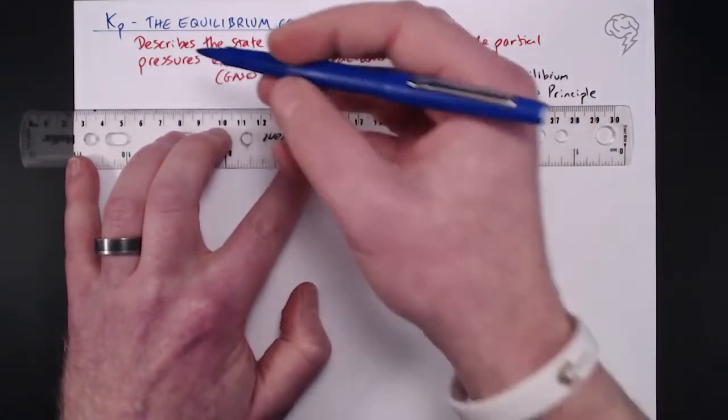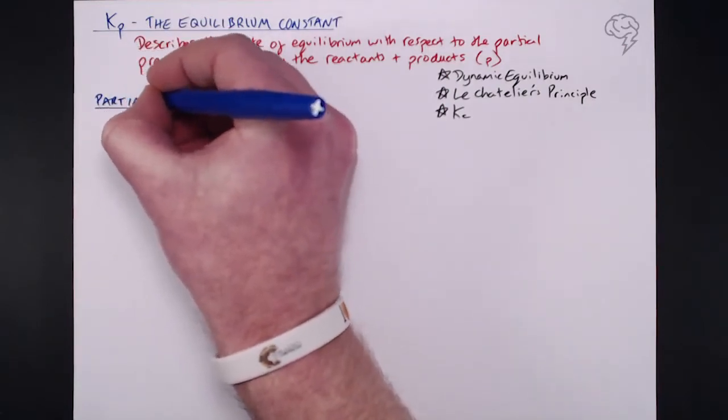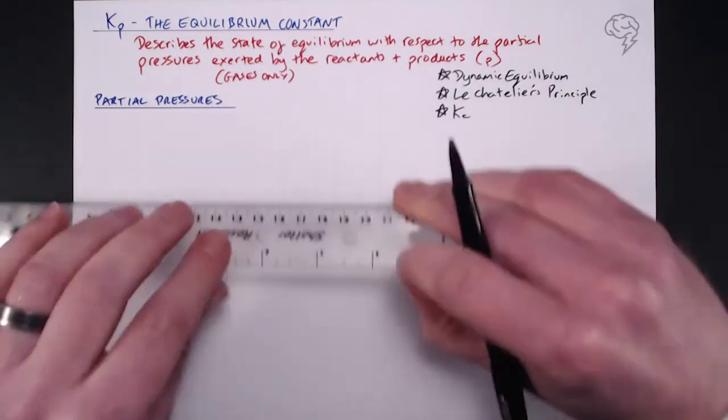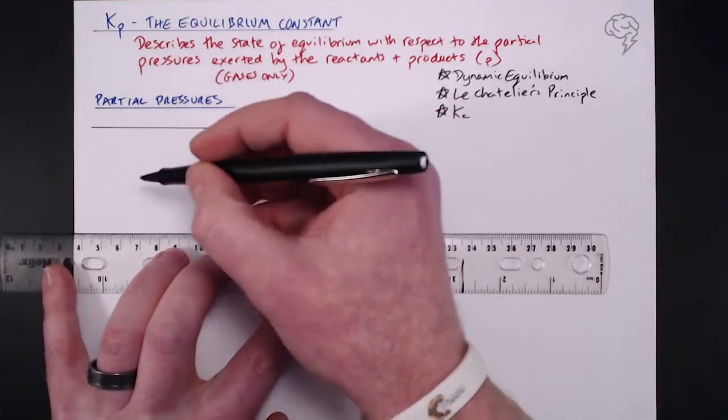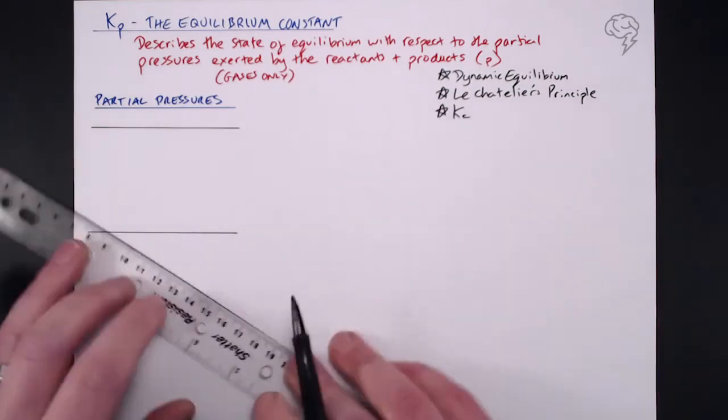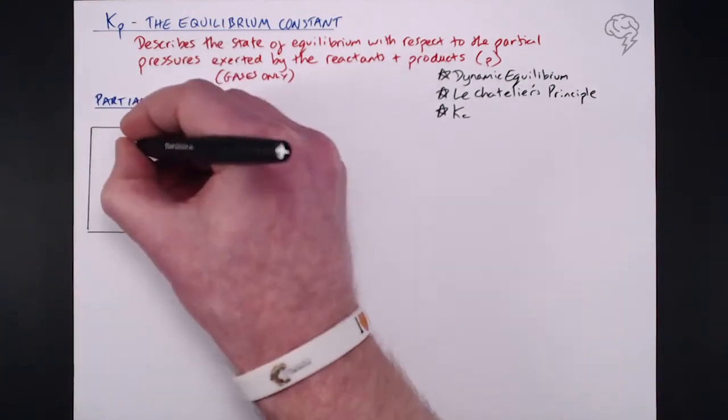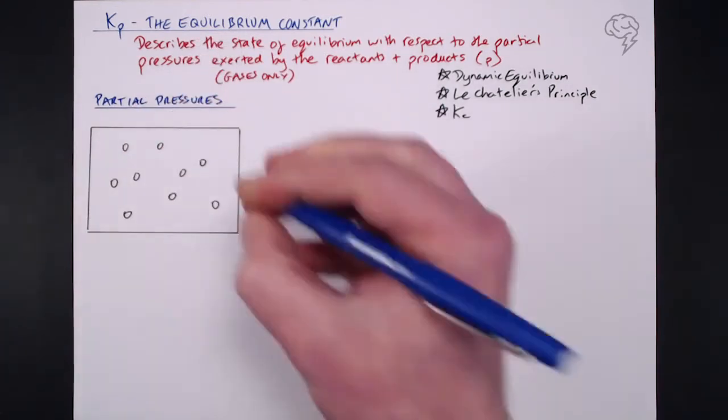So let's go take a look at this definition that we've got here. So with respect to the partial pressures exerted by the reactants and products. Well, what the hell do we mean by partial pressures? I always find it's useful to take a look at a diagram for this. So what are partial pressures? So what I'm doing here is I'm just putting together a closed system. So I'm just going to draw a closed vessel.